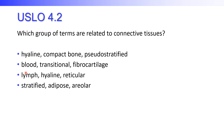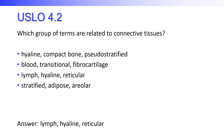Looking at the third option: lymph, hyaline, and reticular. Lymph is one of the liquid connective tissues. Hyaline is a type of cartilage, which is supportive connective tissue. Reticular tissue is a type of loose connective tissue. The fourth option includes 'stratified,' which refers to epithelium. So the answer is the third one: lymph, hyaline, and reticular.